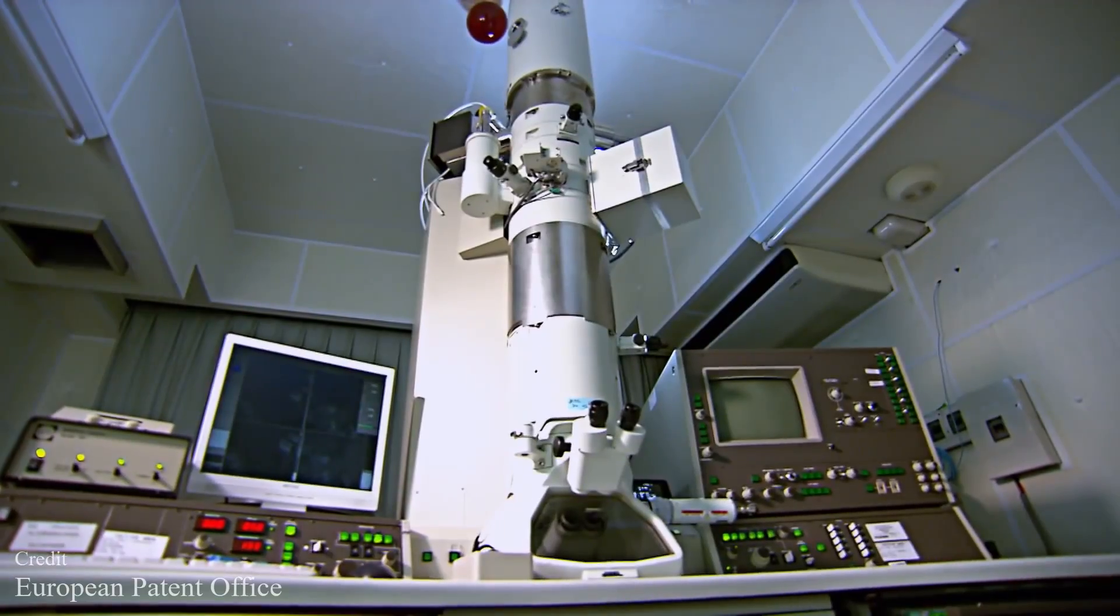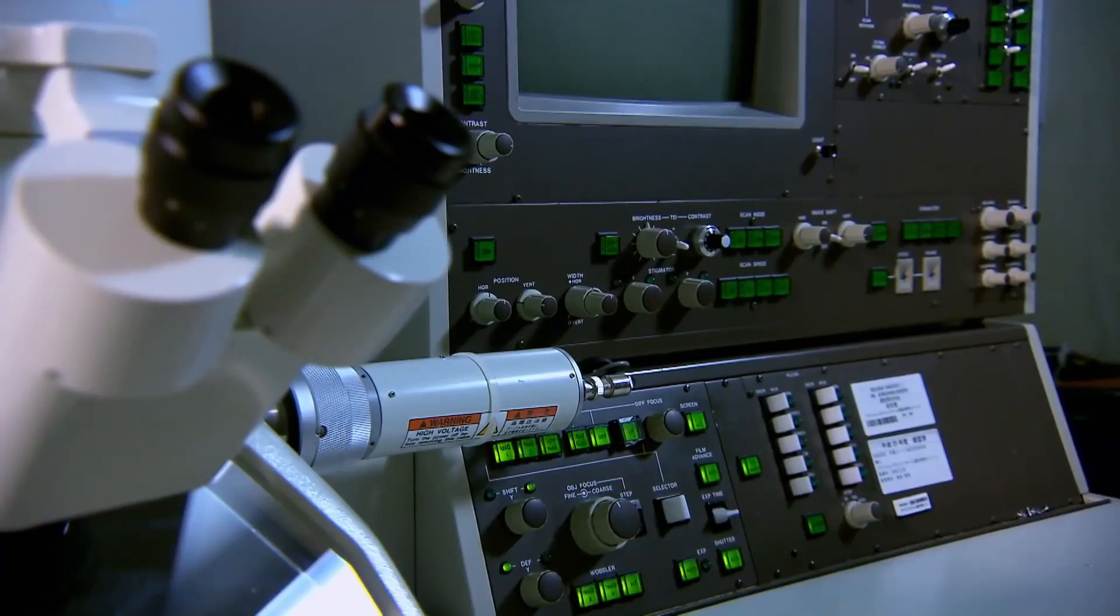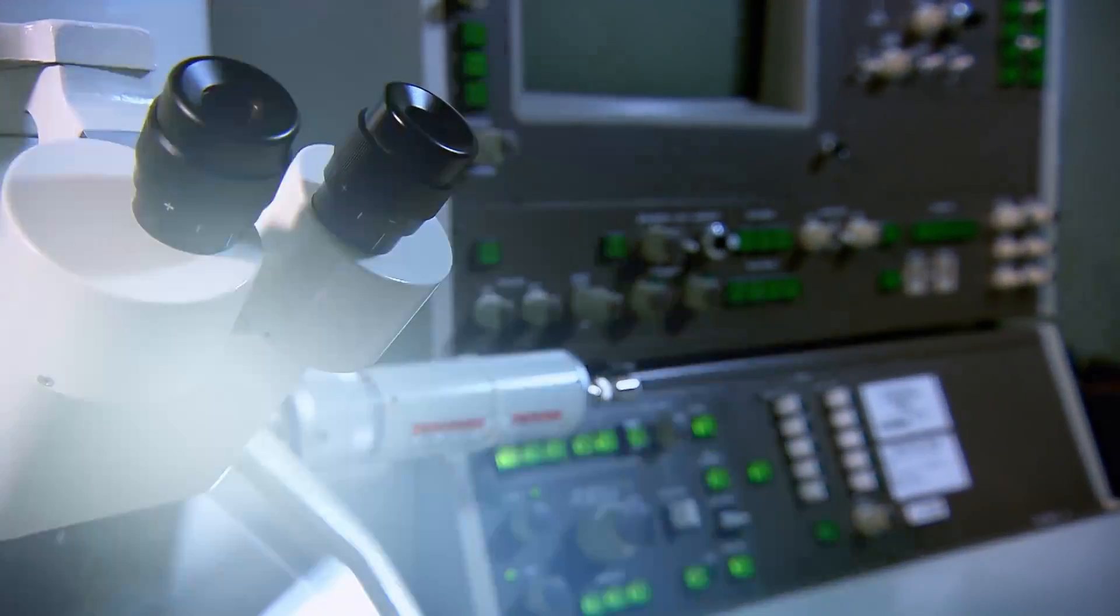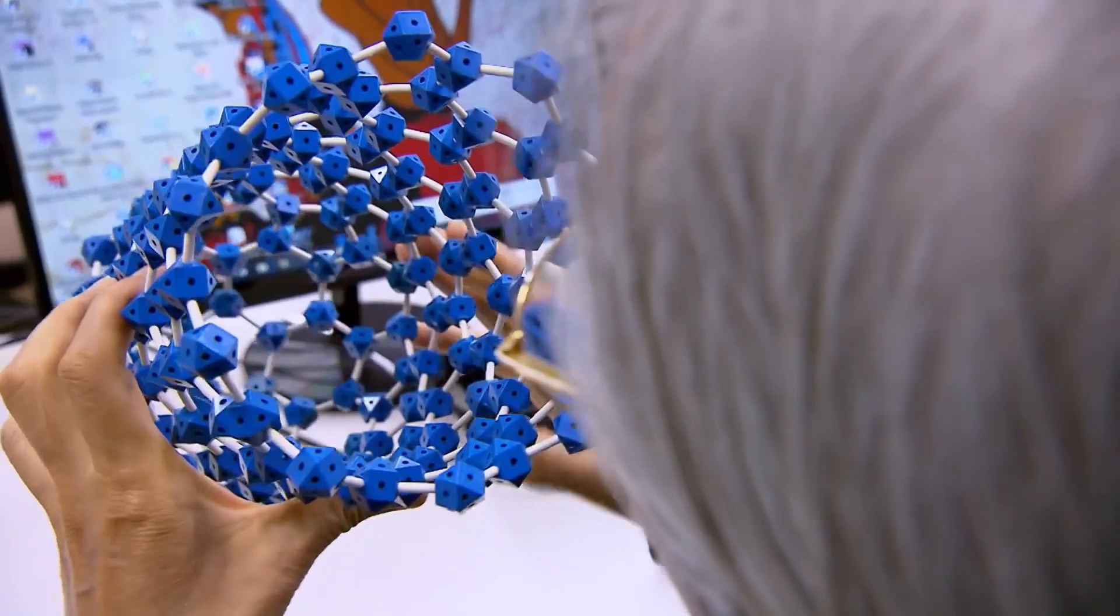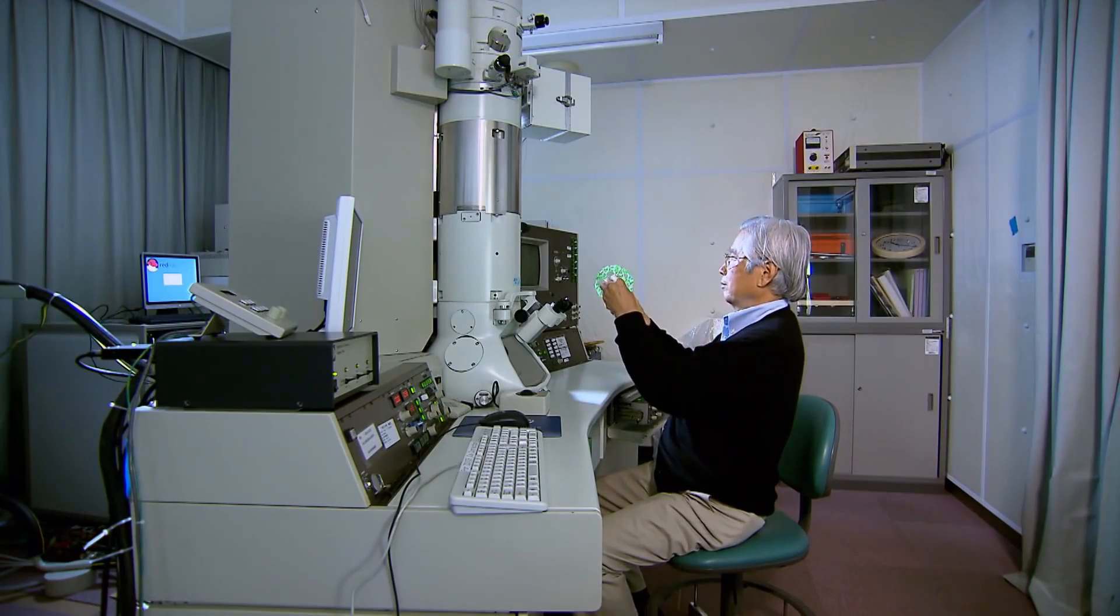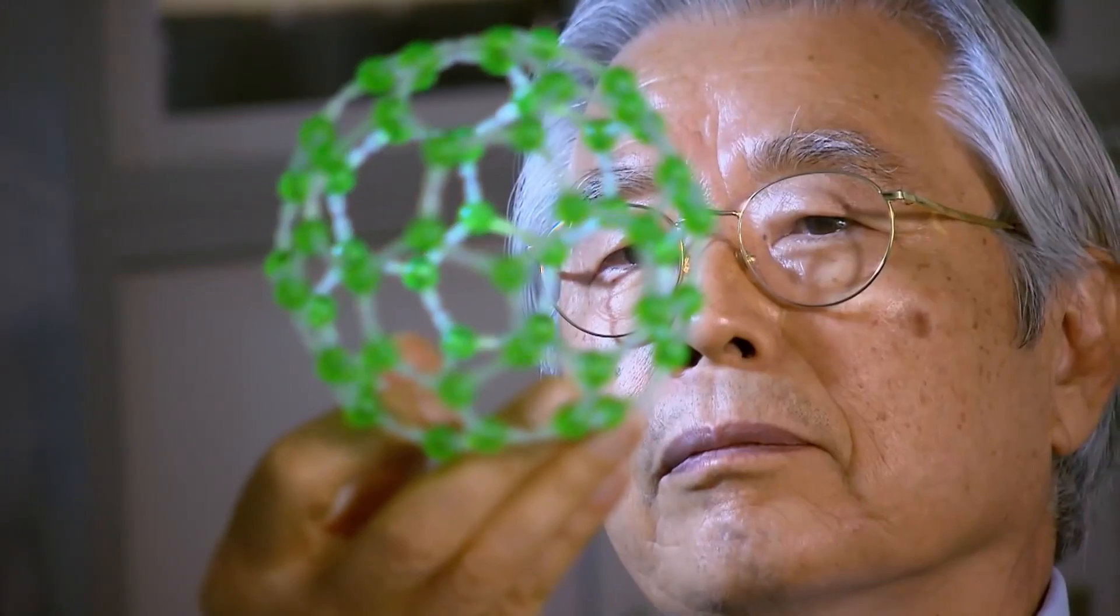The earliest credited discovery of carbon nanotubes is dated back to 1991 when Japanese inventor and physicist Sumio Iijima published a groundbreaking paper in which he reported the discovery of multi-walled carbon nanotubes. The structure of these carbon nanotubes is chemically bonded with sp2 bonds, which is an extremely strong type of molecular interaction.